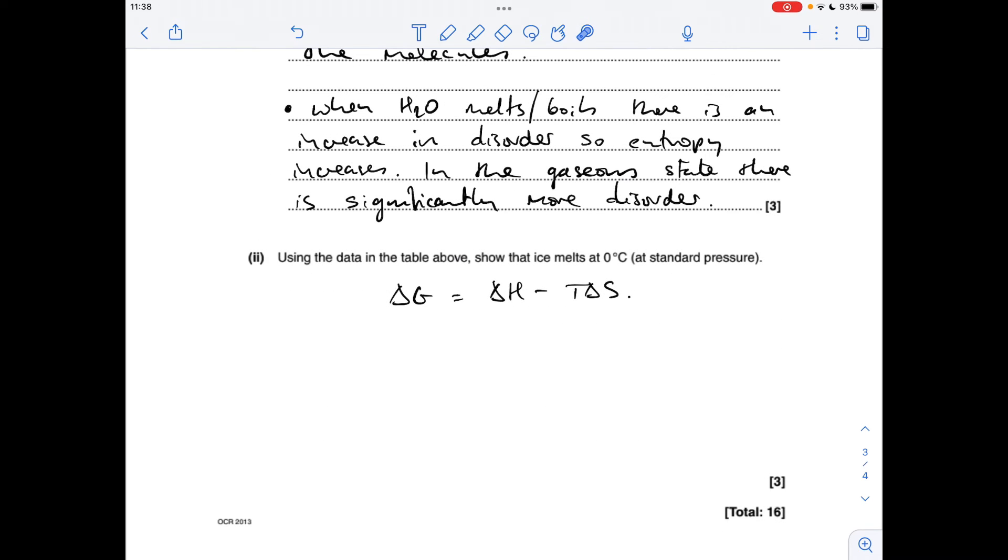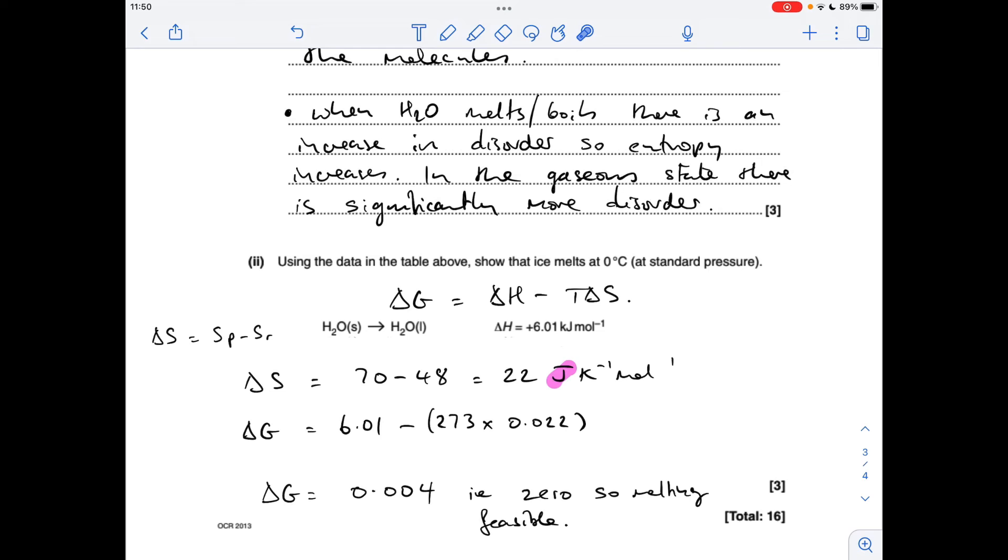And for the final part of the question we've got to show that ice melts at zero degrees C. Basically we need to find out the value of ΔG at that temperature. If it's zero or negative that means the ice will melt spontaneously. So I'll just go through the calculation.